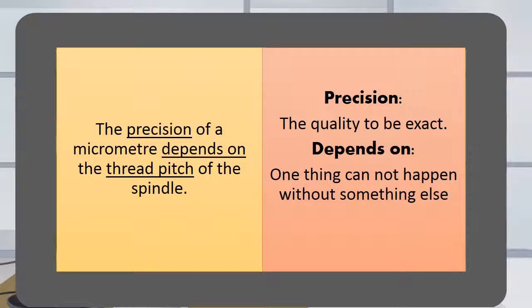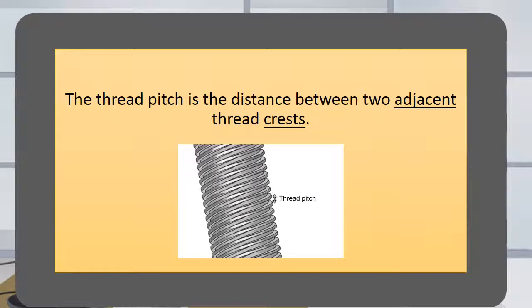Precision is the quality to be exact and depends on the thread pitch. One thing cannot happen without something else. The thread pitch is the distance between two adjacent thread crests.